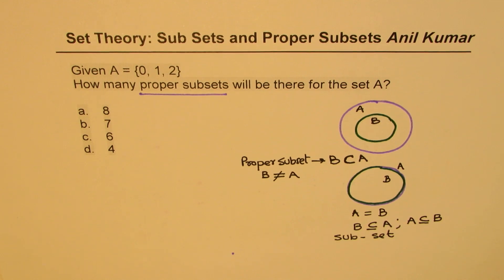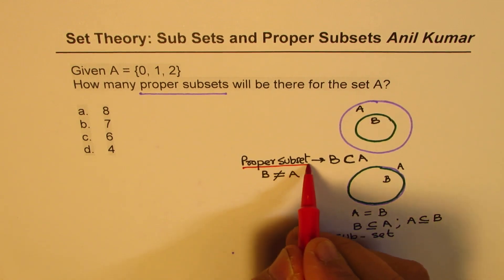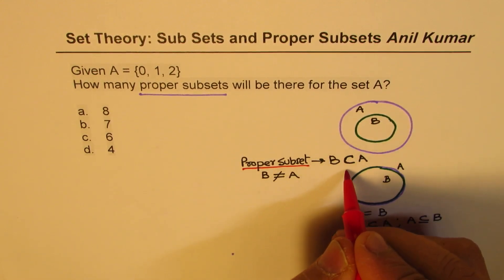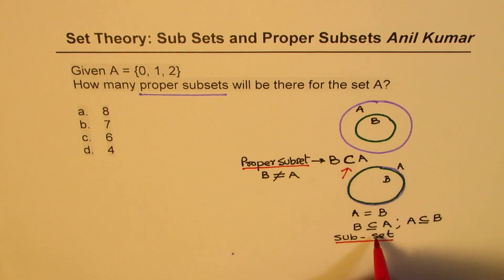So I hope that makes the point very clear. What do we understand by proper subset and subset? And the symbols are also different. Do you see that symbol here and here? So that underscore is not there in proper subset.